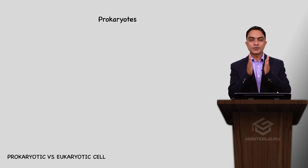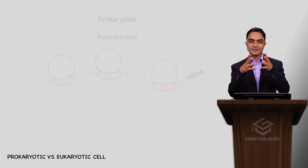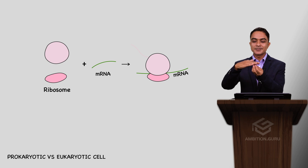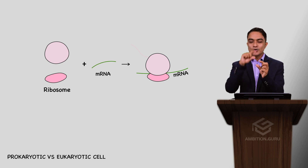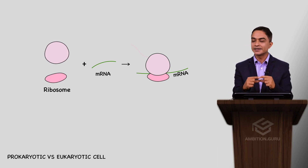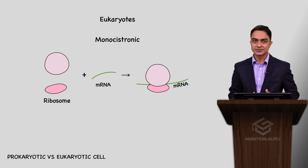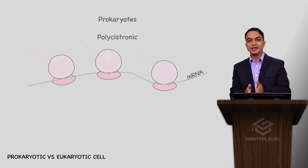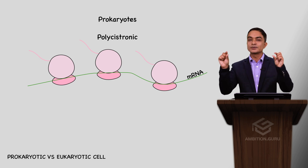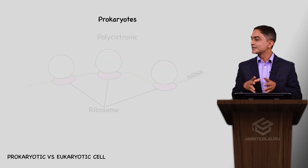In prokaryotes, mRNA is polycistronic — multiple ribosomes can attach to a single mRNA during protein synthesis. In eukaryotes, mRNA is monocistronic — only one ribosome complex attaches to the mRNA at a time. So polycistronic mRNA is the prokaryotic condition, and monocistronic mRNA is common in eukaryotes.